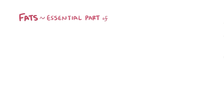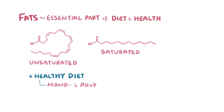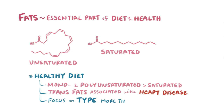As a quick recap: fats are an essential part of our diet and health. Fatty acids are either saturated or unsaturated, and foods with fat always have a mixture of fatty acid types. Healthy diets emphasize mono- and polyunsaturated fats over saturated fats, and trans fats are associated with an increased risk of cardiovascular disease. Improvements to our diet and health can be made by focusing more on the type of fat we eat and less on the amount.